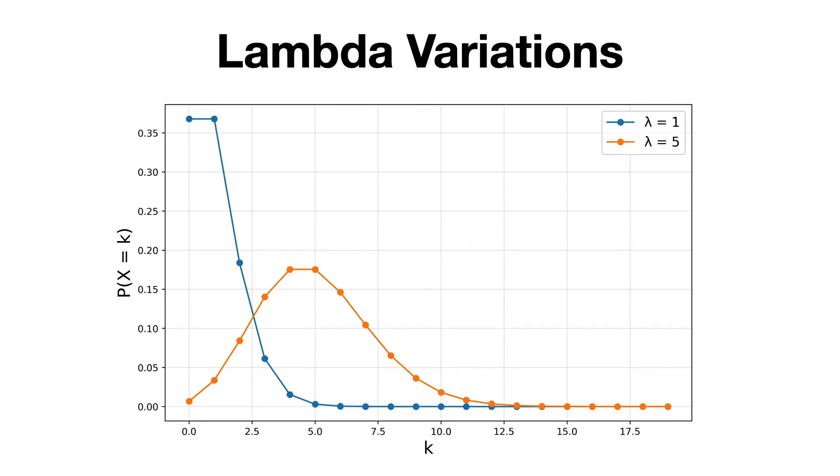As lambda increases, the distribution begins to spread out and becomes more symmetric. For example, at lambda equals 5, the probabilities for k equals 3, 4, 5, 7, and 6 are relatively high, and the peak of the distribution shifts to the right. This reflects that, on average, we expect 5 occurrences.